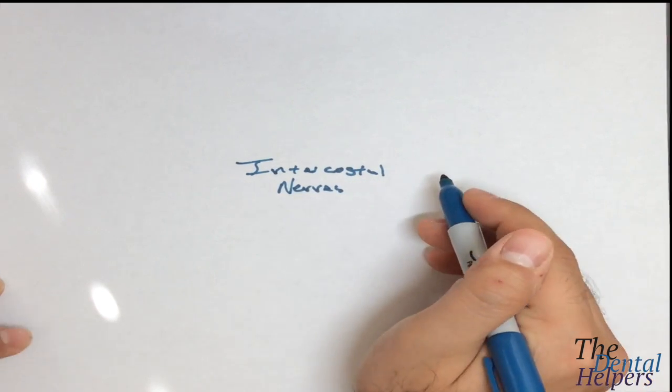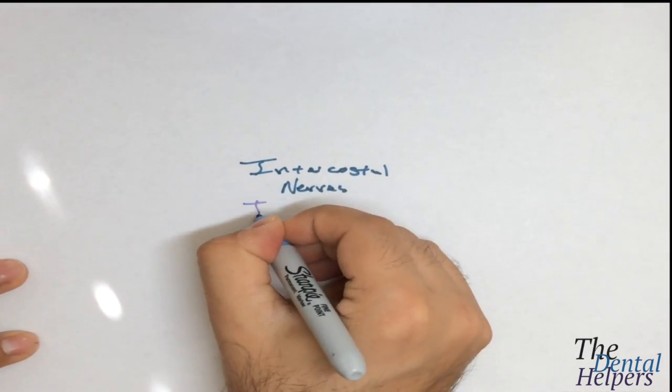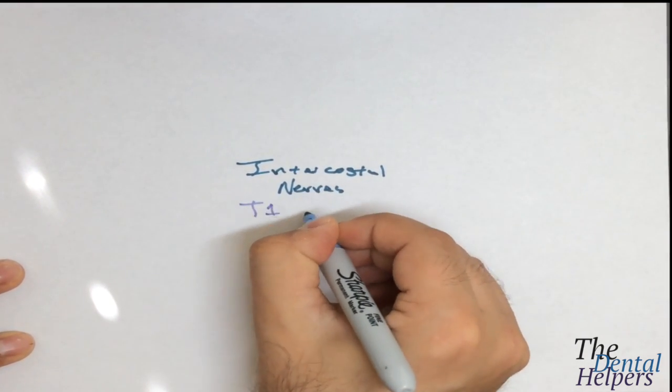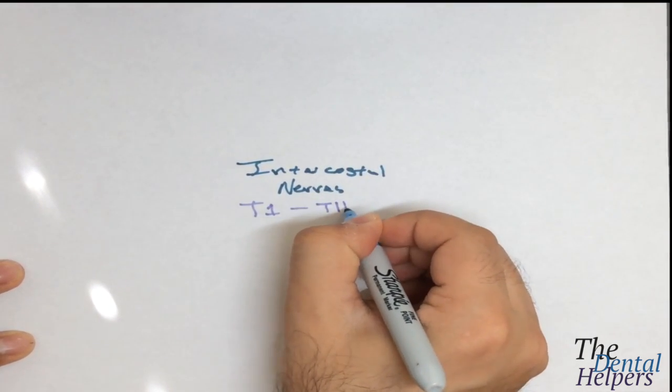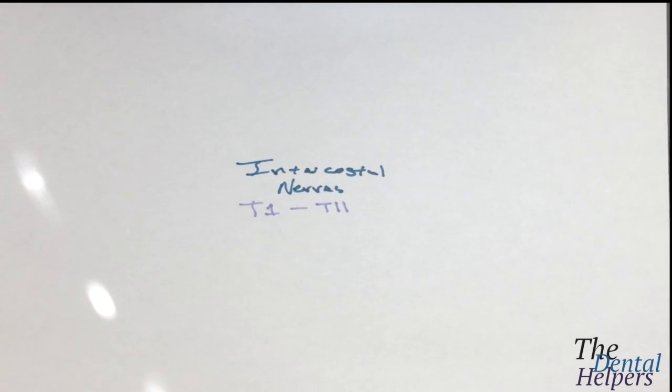The intercostal nerves are T1 to T11. T12 is the subcostal nerve. These are continuations of the ventral rami of the spinal nerves.